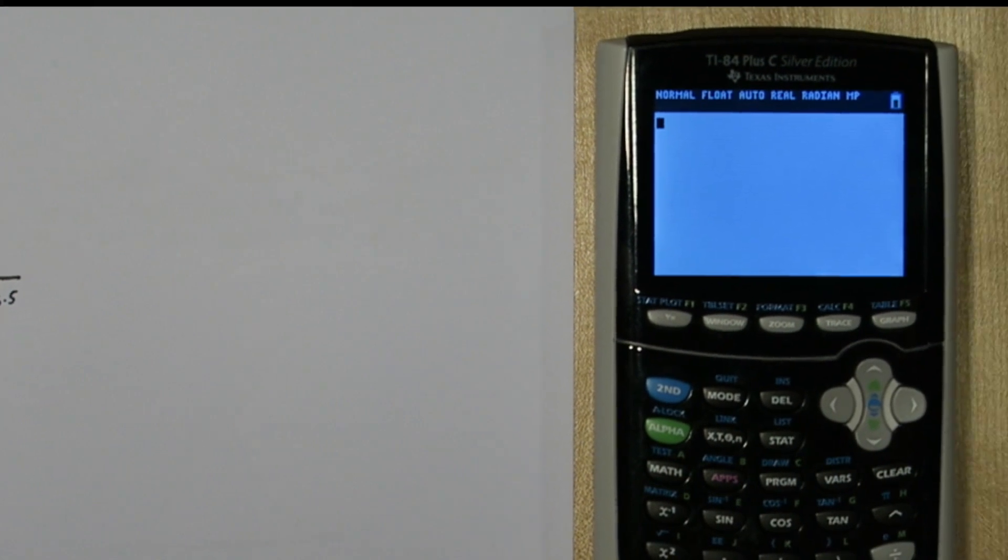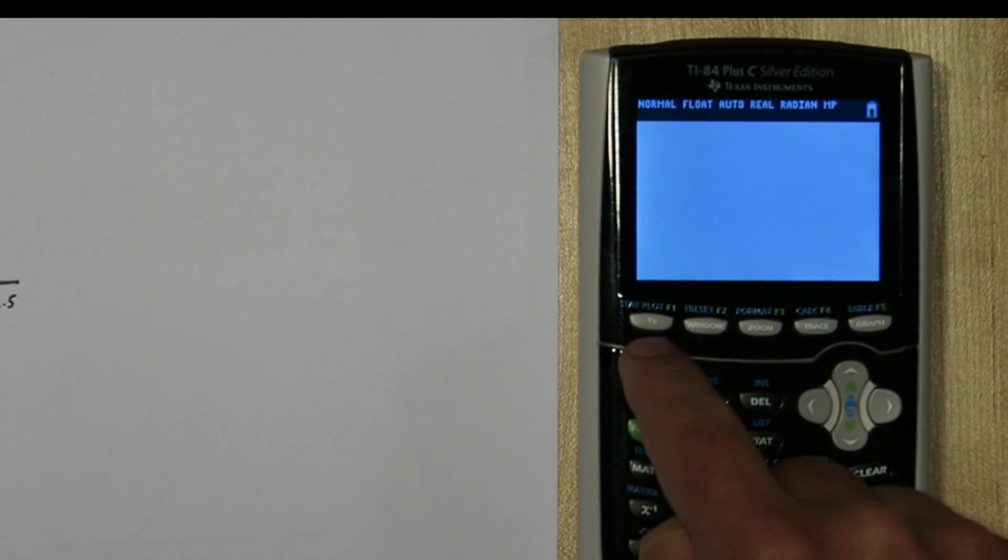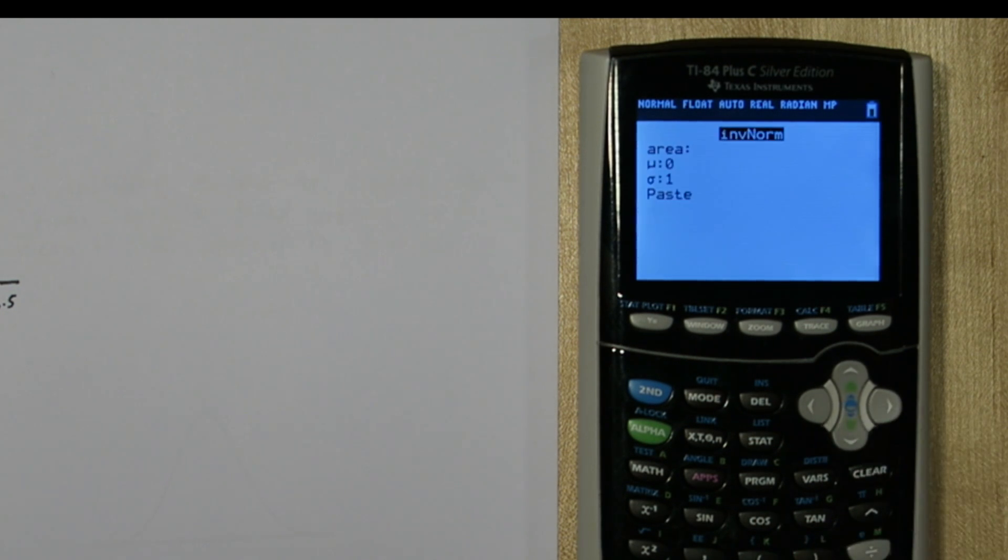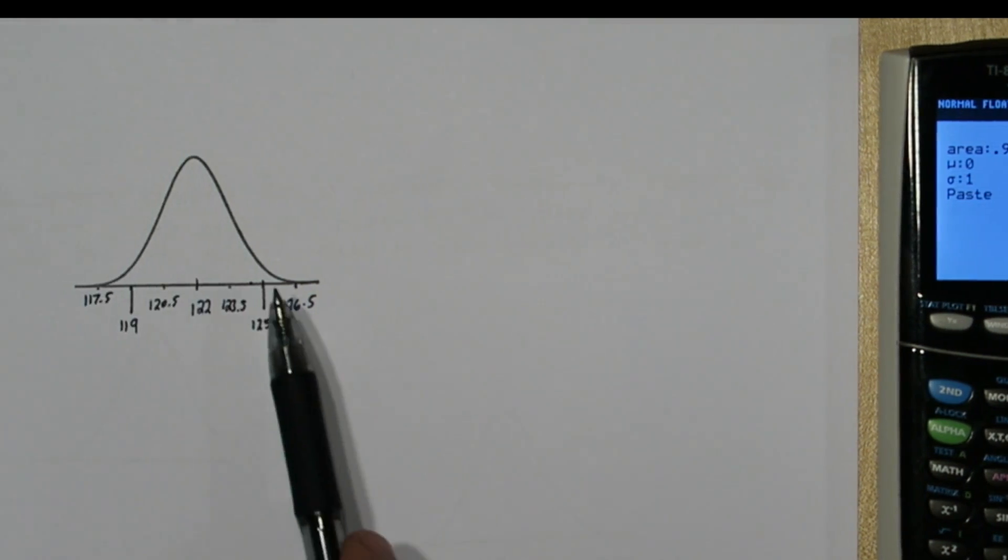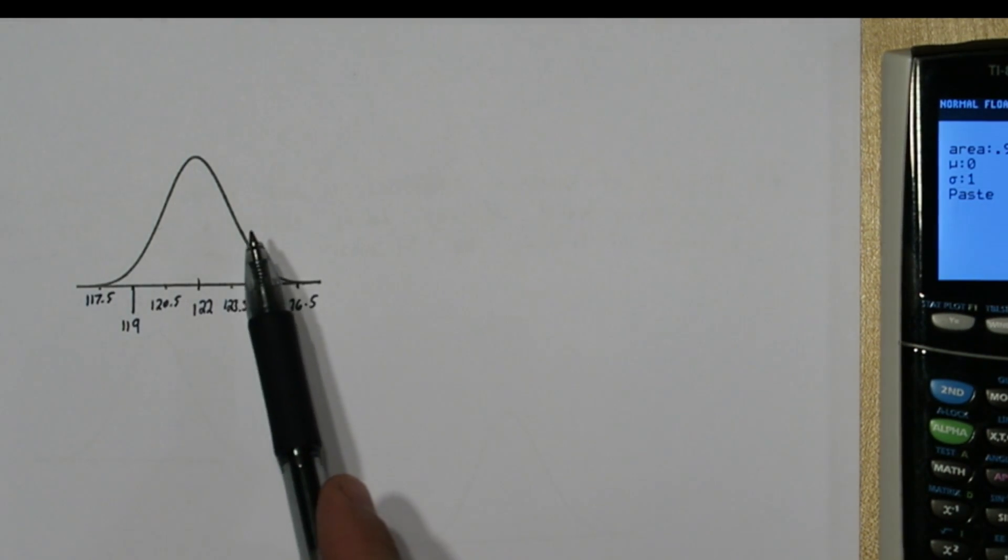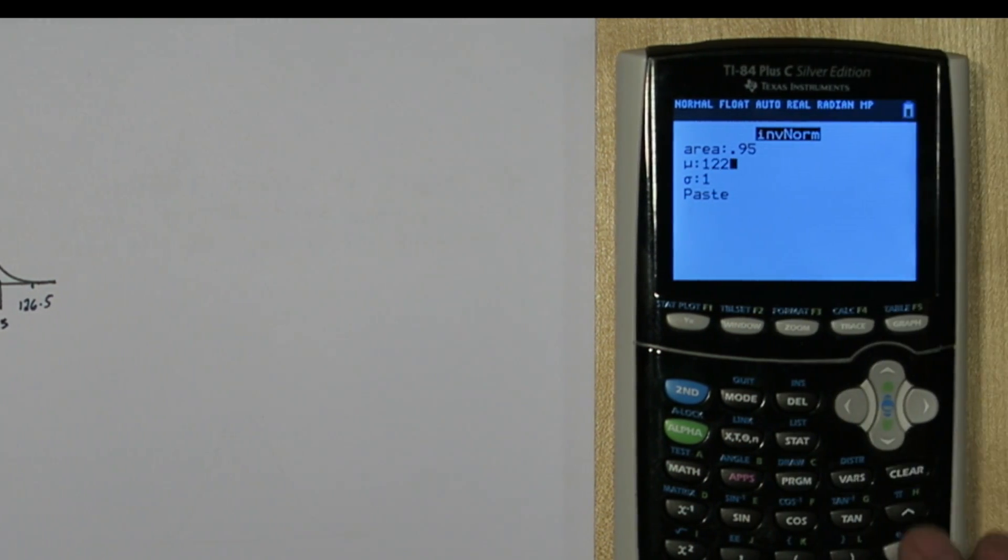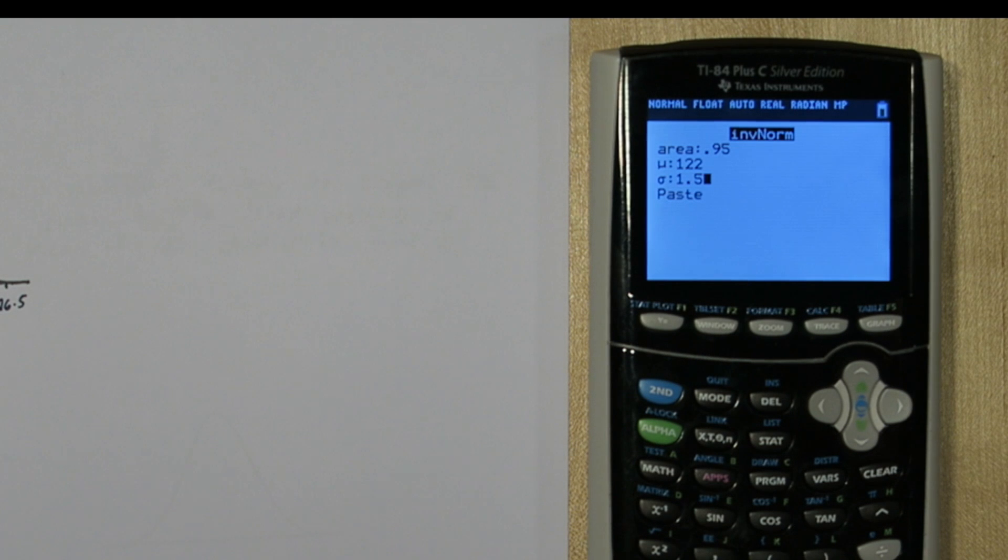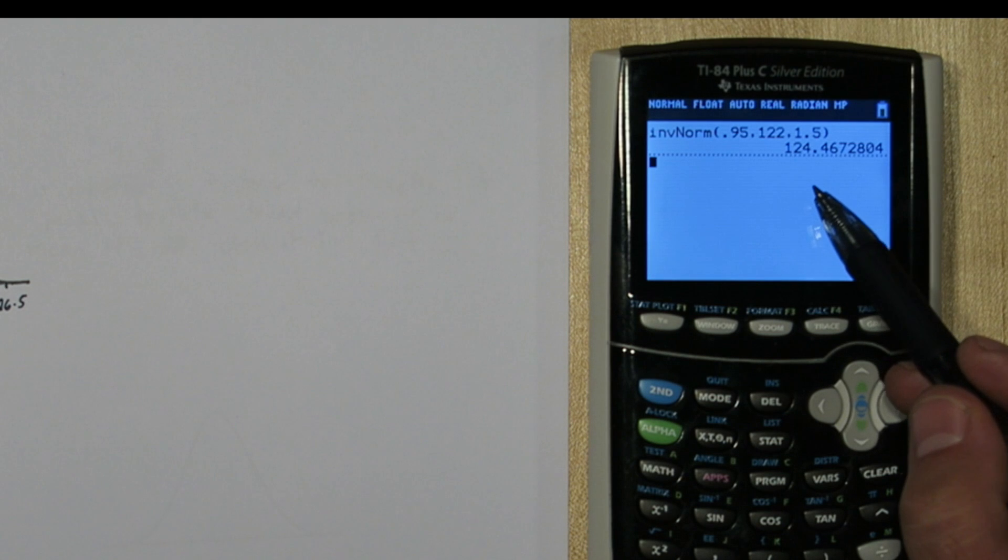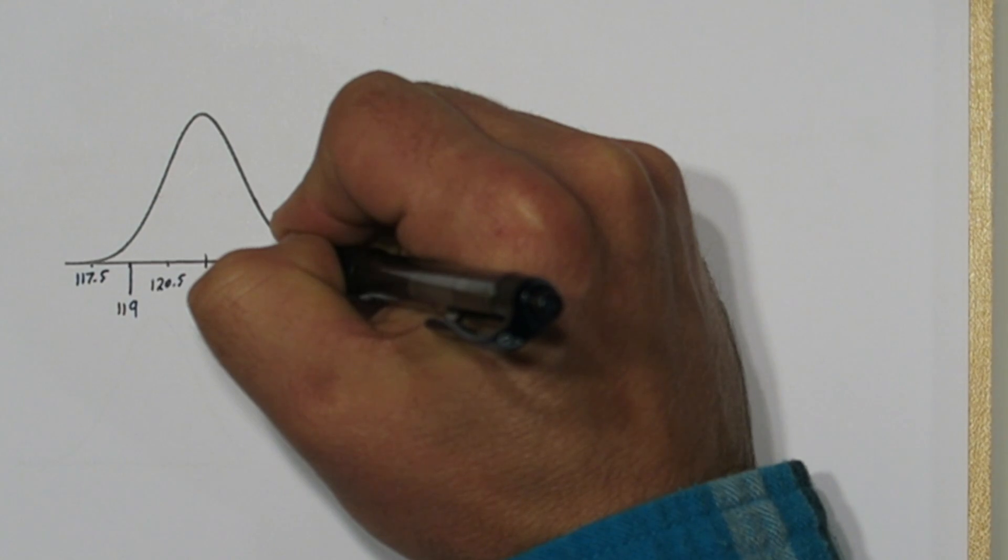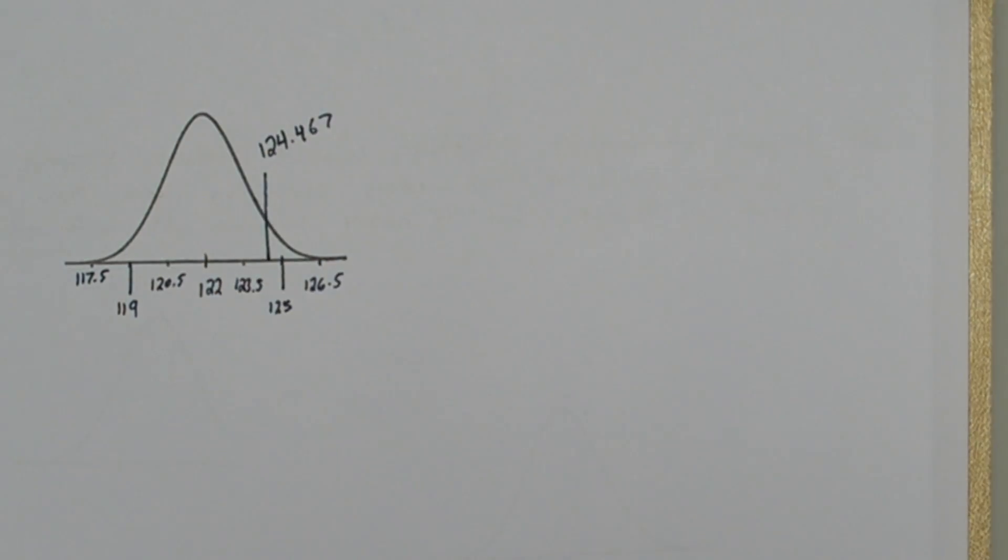So that's like up here, 5%. Remember the area under this whole curve is 1, so where's this upper 5%? We can actually calculate where that cutoff is with our calculator. Press 2nd then VARS and go to inverse norm. Now the area we're interested in is 0.95. That's because if we're looking at the upper 5%, 95% of the area would be lower than that. For mean we're going to put 122 and standard deviation 1.5.